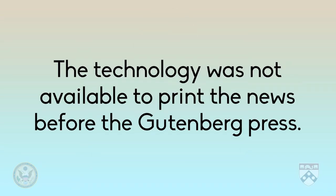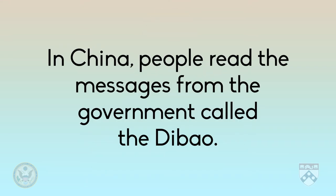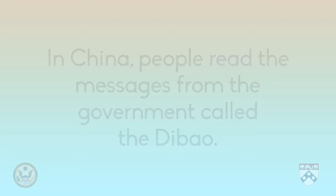You may notice that there are many verbs that do not take an -ed ending. For example: the technology was not available to print the news before the Gutenberg press. In this sentence, the verb 'to be' is put in the past — this is an irregular verb. Here's another example: in China, people read the messages from the government called the Dabao. Here, the verb 'to read' is in the past. There are as many as 400 irregular verbs.